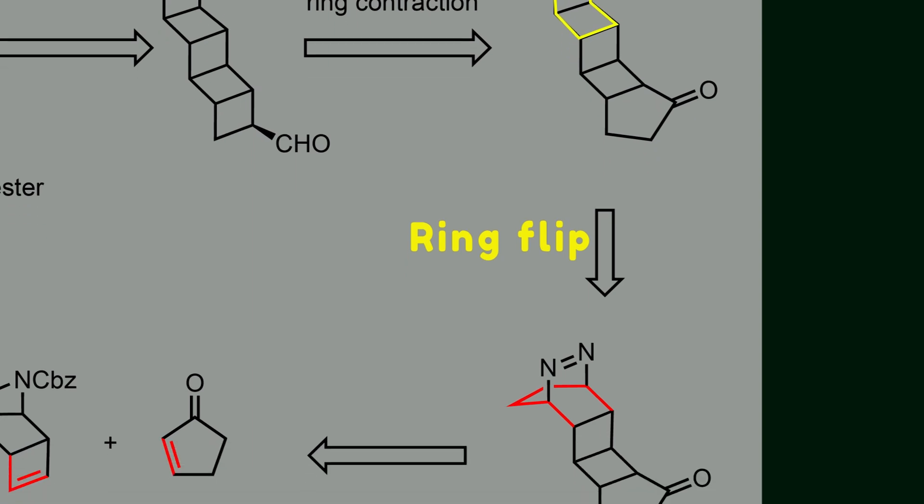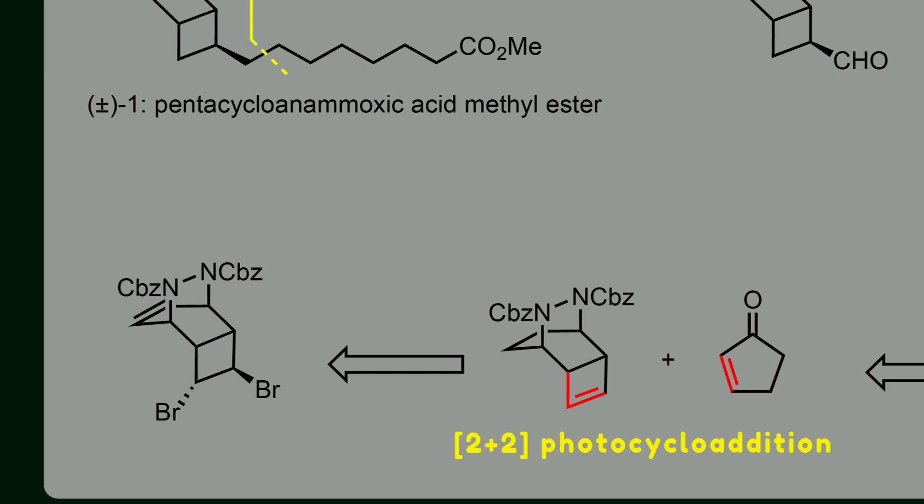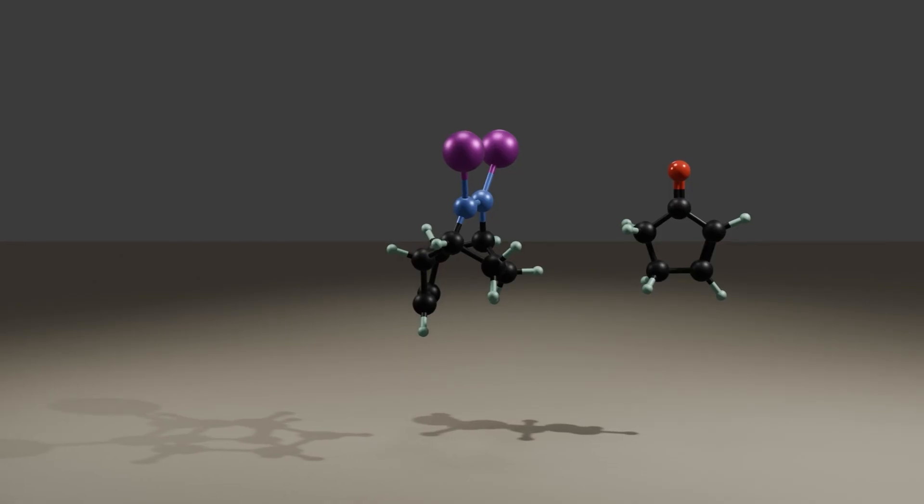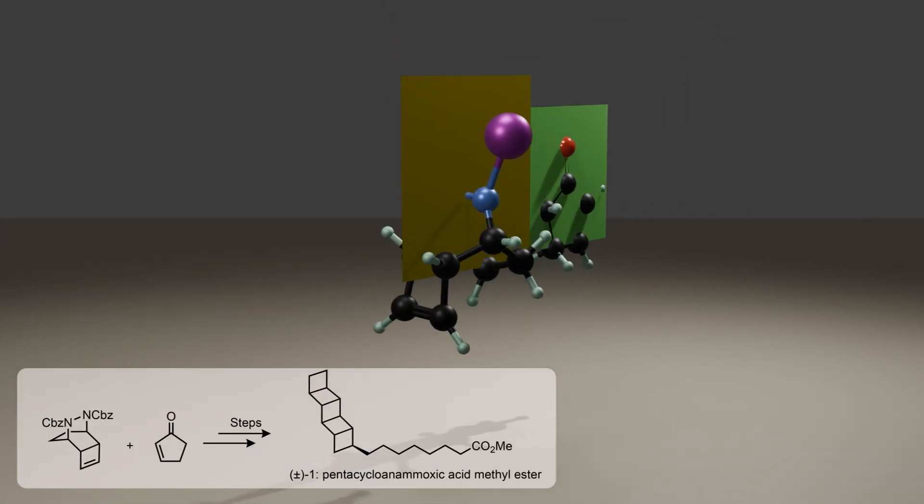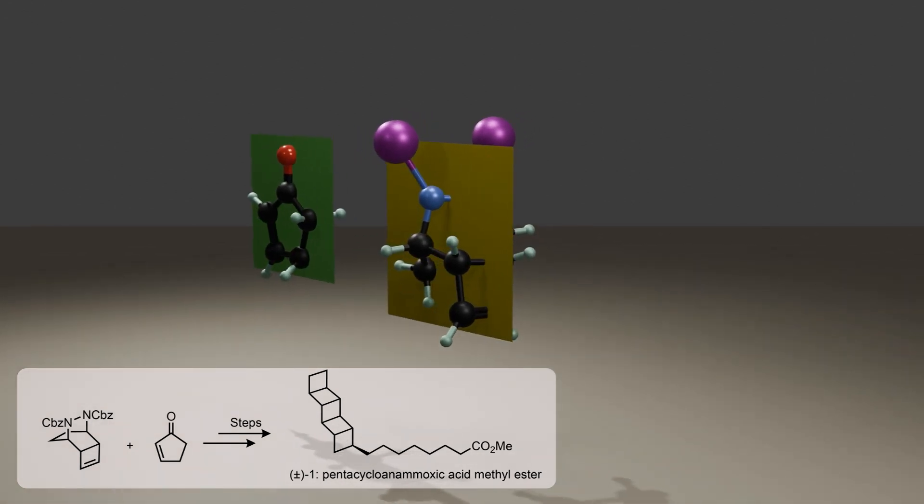This azo compound is readily accessible through a 2+2 photocycloaddition of the corresponding cyclopentanone and tricyclic compound which was traced back through its dibromide compound. Notice that we start the synthesis with these two key fragments which are achiral due to having a plane of symmetry. So the final target will be a racemate.